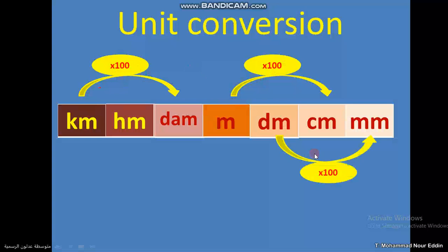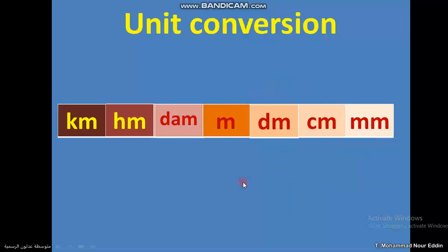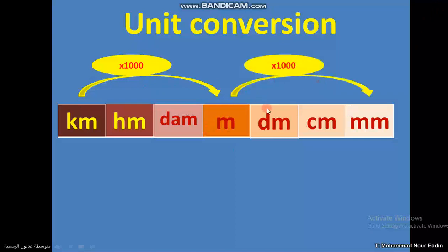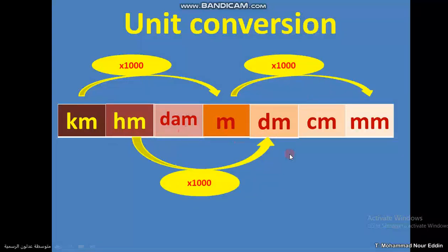If I go from decimeter to millimeter — that is two steps — we multiply by 100. From kilometer to meter is three steps, so three zeros — we multiply by 1,000. From meter to millimeter is also three steps — multiply by 1,000. From hectometer to decimeter is three steps — multiply by 1,000.